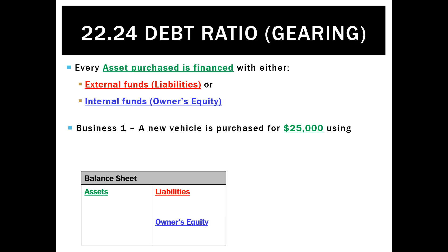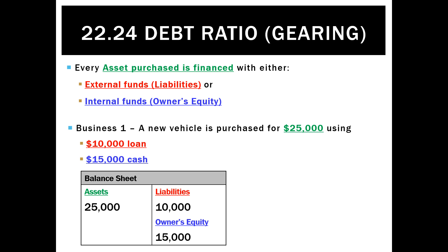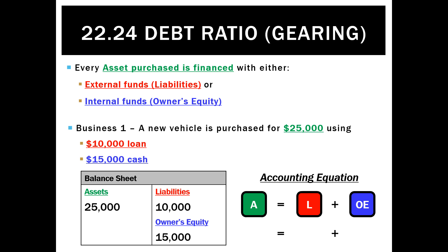Take business one that bought a $25,000 vehicle and they've used $10,000 of borrowed money to do it and $15,000 of their own cash. So in their balance sheet, they'd show assets of $25,000, liabilities of $10,000, and owner's equity of $15,000. That would show up in the accounting equation as assets of $25,000 on one side and $10,000 and $15,000 on the other.